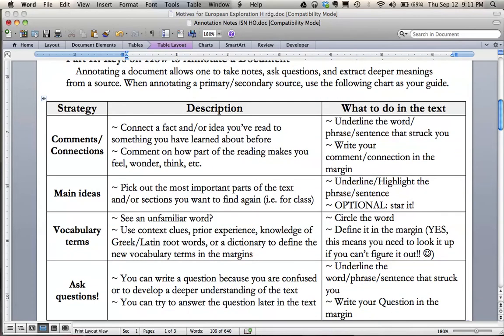So there's four basic things you should be doing when you're annotating a source: commenting, finding the main ideas, circling vocabulary terms that you don't know, and then asking questions. So like we said before with IC, it means you need to be responding to the text, engaging with it. So comments or connections, it's just like it sounds, connecting a fact or idea, commenting on how it makes you feel. And what you're going to do is you're going to underline the word or the phrase or sentence that struck you and then write your comment or connection in the margin. I saw a lot of you doing this earlier this week.